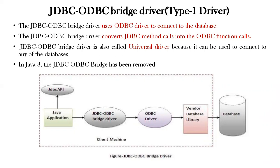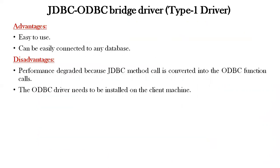The JDBC API connects the Java application through the JDBC-ODBC bridge driver to the ODBC driver, and then through the vendor database library to connect to any database, using client-side settings with the JDBC-ODBC bridge driver. The Type 1 driver's advantages: it is easy to use and can easily connect to any database. Disadvantages: performance is degraded because the JDBC method calls are converted to ODBC function calls, and the JDBC driver needs to be installed on the client machine.